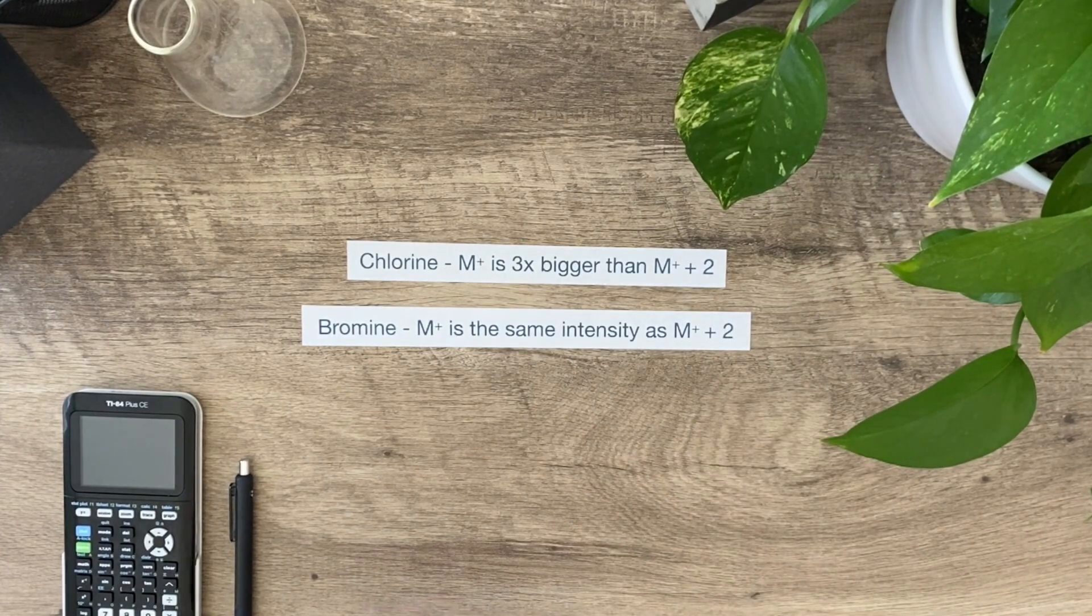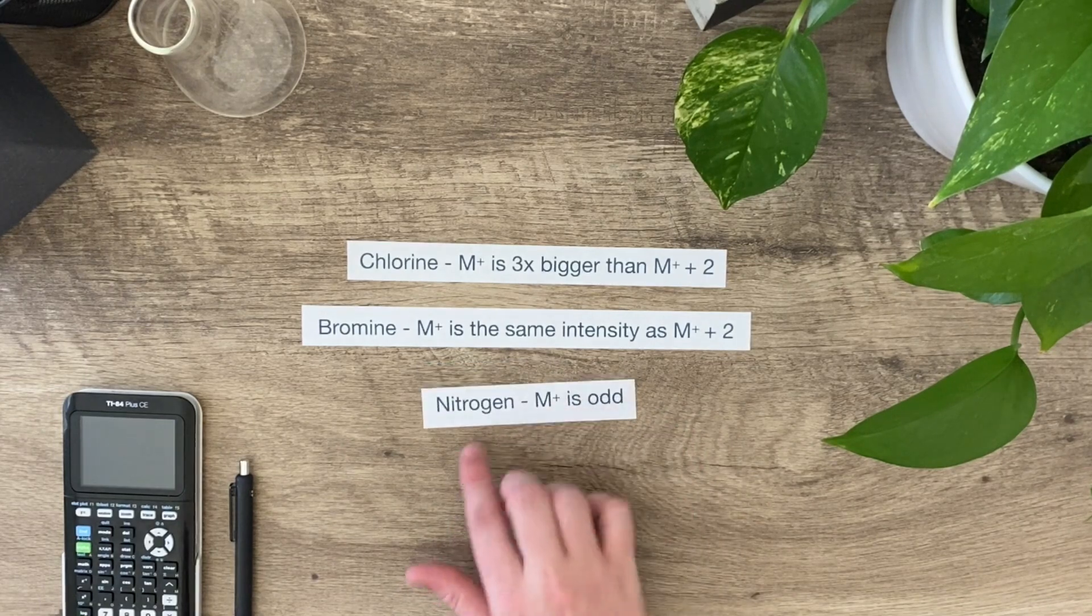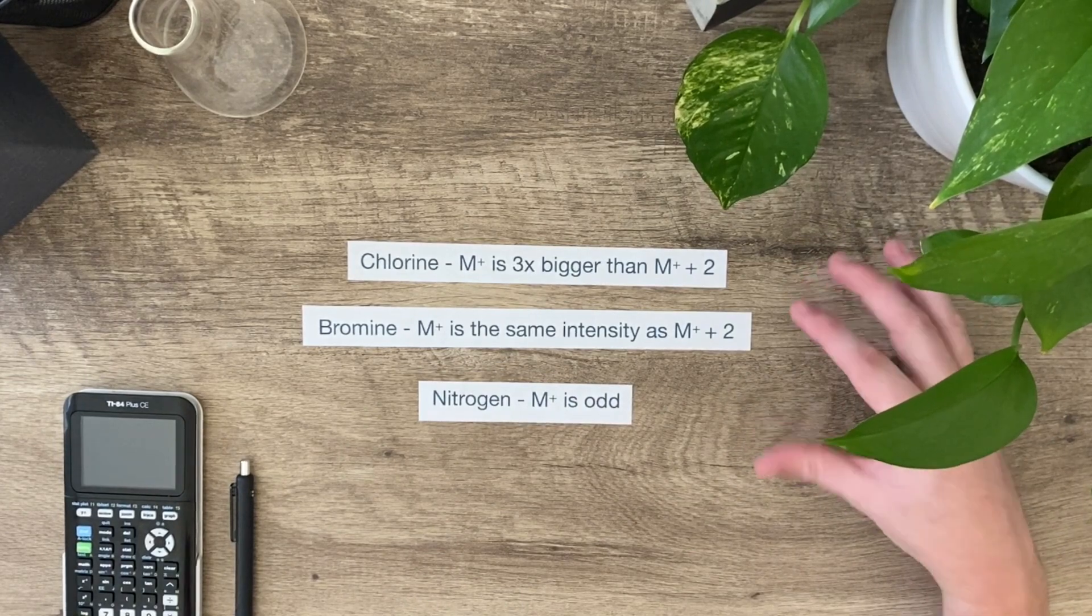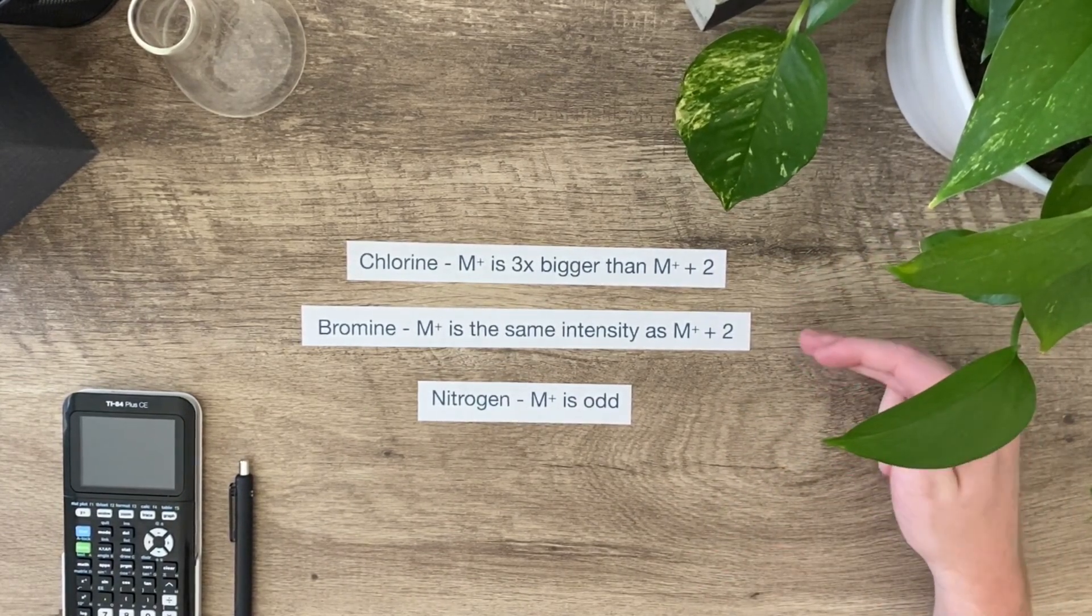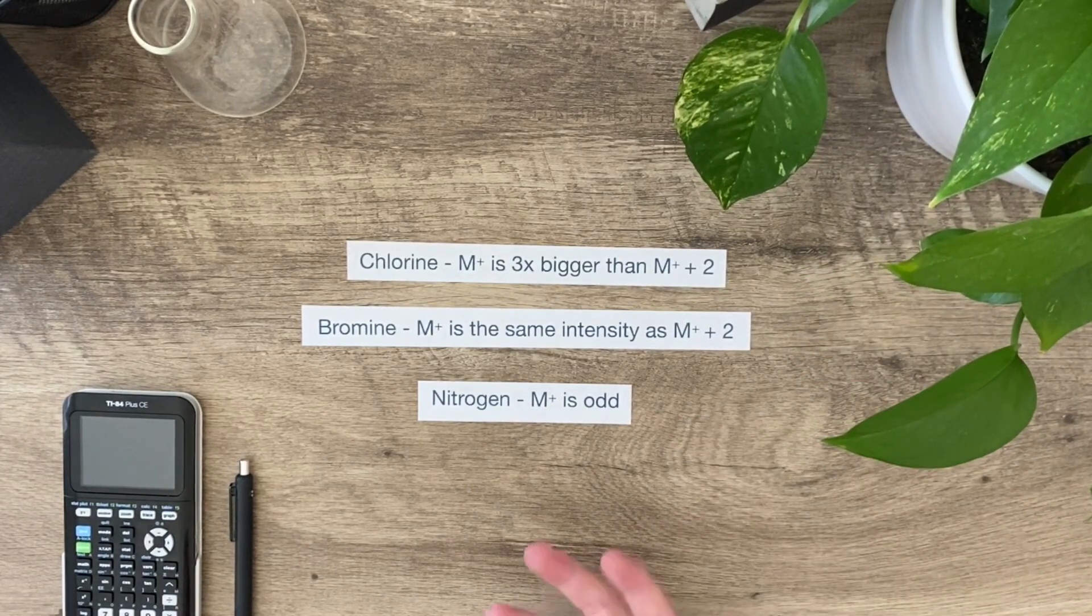The last one that I want you to be aware of is if the M+ peak is odd, that means that nitrogen is present. Those are the three things that you need to be aware of when you're given a spectrum. I might ask you, here's a spectrum, tell me if there's a chlorine present. I might give you a spectrum and ask if a bromine is present or if a nitrogen is present. You can also be able to identify the atom based on the actual ion peaks present.